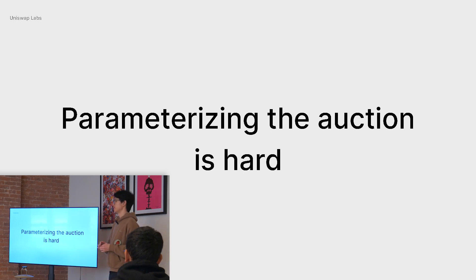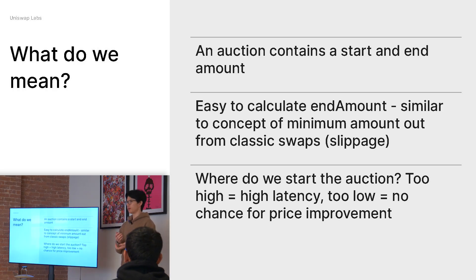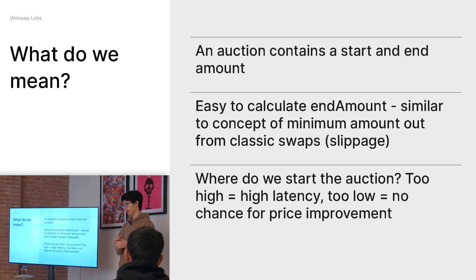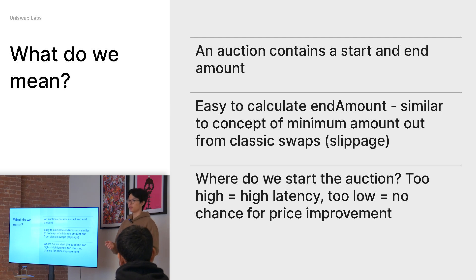One of the problems right now is that it's very difficult to parametrize this auction. Because it's a Dutch auction, we need to figure out what price to start the order at and what price to end the order at. The end amount is straightforward — it's synonymous with the current concept of slippage, a min amount out that the user sets. But figuring out the start amount is harder. If we set it too high, we get really high latency — users are waiting several blocks before the order fills. If it's too low, we don't give the user a chance for price improvement, which is one of the core goals of the protocol.